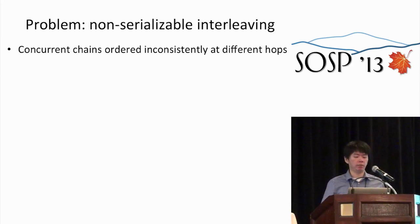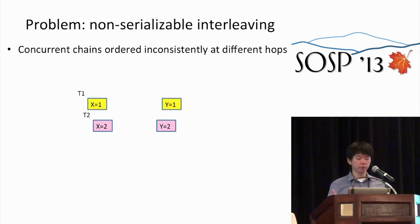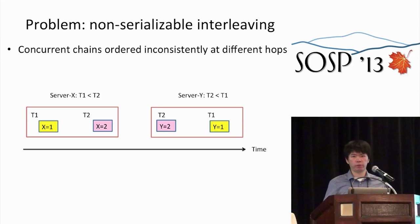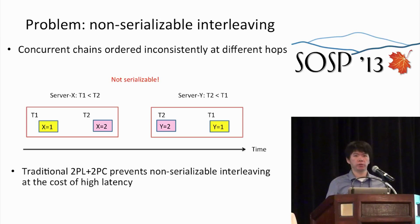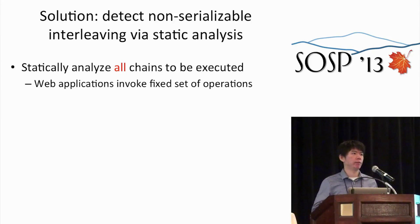Another danger is that chains could allow non-serializable interleaving during execution. For example, with two transactions T1 and T2 both modifying variables X and Y, the storage server for X could have T1 ordered before T2, while the storage server for Y has T1 ordered after T2 — a contradiction, meaning the execution is not serializable. The traditional way to address this is two-phase locking and two-phase commit, but that has high latency. For web applications, we actually know all the actions beforehand, so we can use static analysis to detect non-serializable interleavings and prevent them from executing.